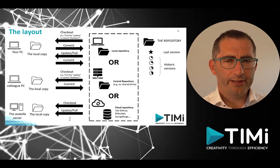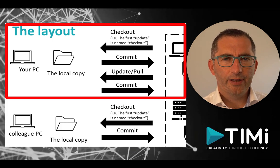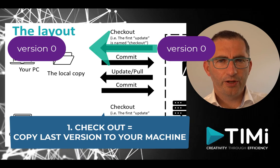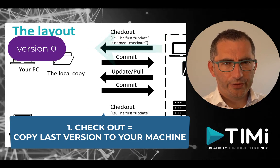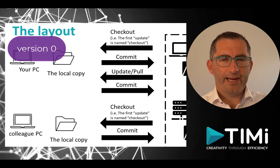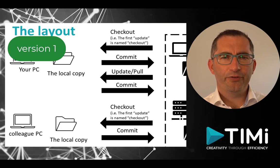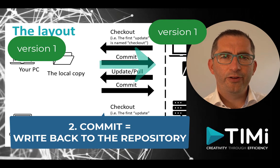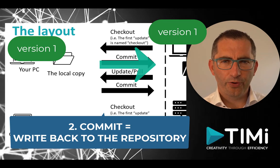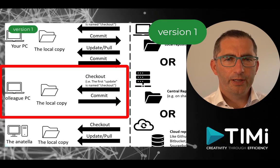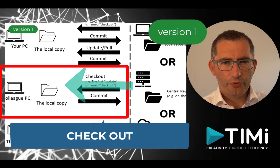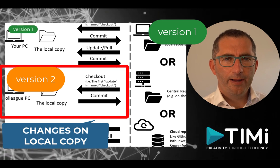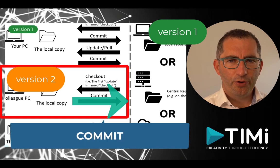When the data engineer or data scientist on the first laptop starts working on a project, the first step is to check out the repository to his local machine. The checkout is a copy of the last known version of your data flows and config files copied to the hard drive. He can create new flows or update flows, and when satisfied and everything is tested he commits the result back to the central repository so everybody can use the last version. On the second laptop, a data engineer starts, checks out the code, makes changes to the data flow, and when satisfied commits the result back to the repository.